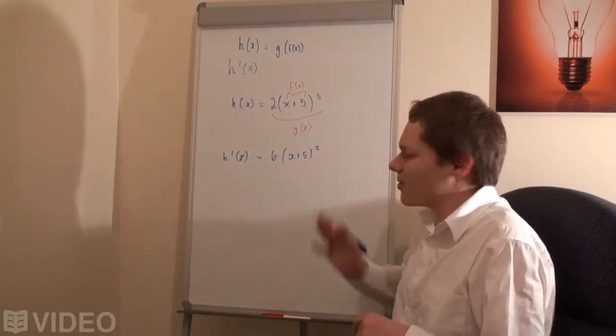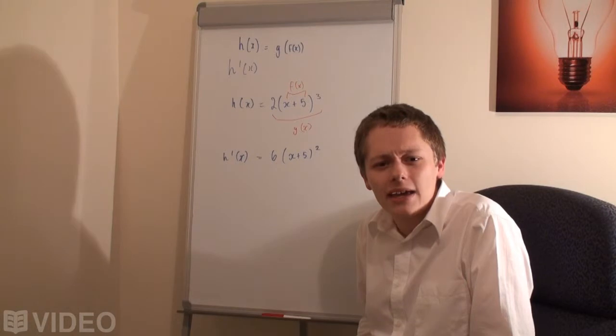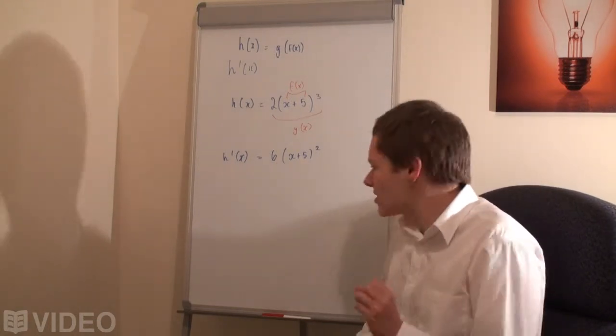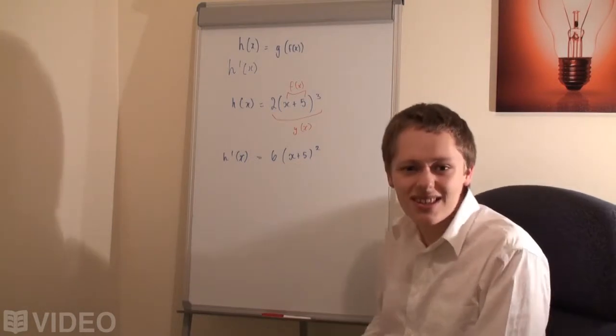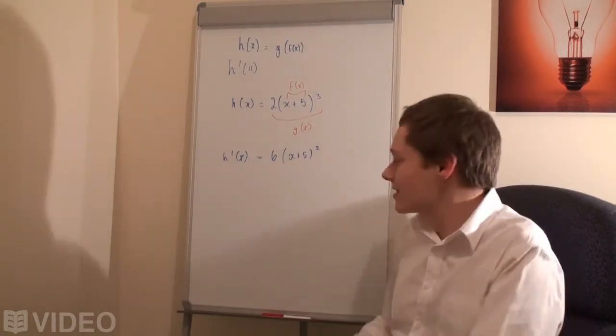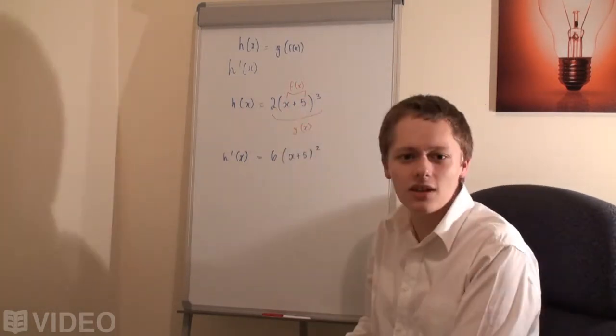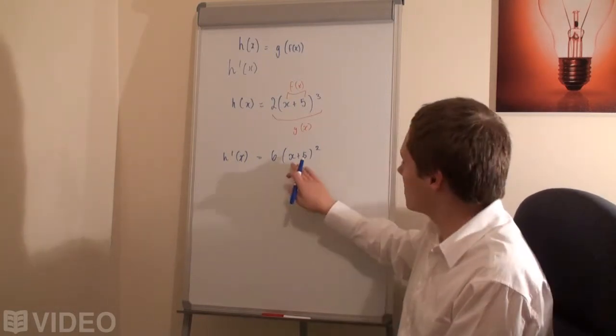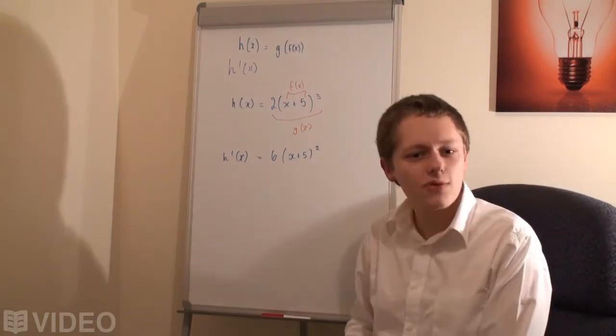But hang on, we've just applied the basic power rule there. There is a little bit extra we need to do. Because this isn't really x, this is actually another function inside the overarching function, we actually need to differentiate what is inside. We need to find the derivative of 2x plus 5.